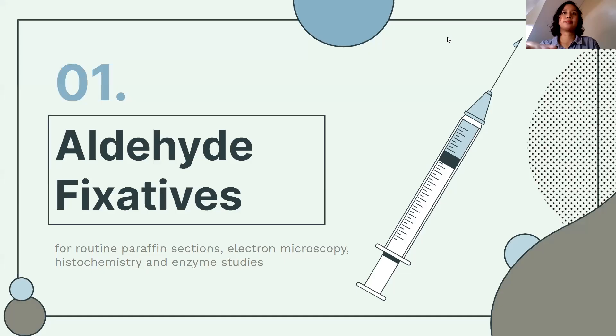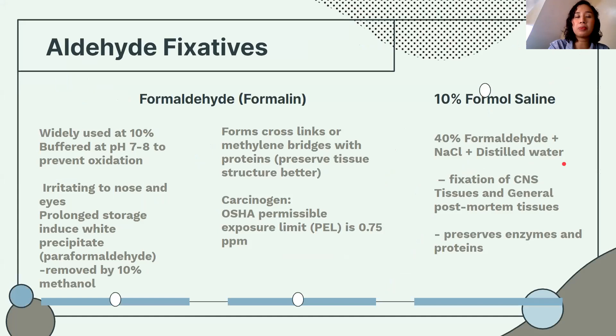Now let's begin with the specific fixatives — aldehyde fixatives. These are used for routine paraffin sections, electron microscopy, histochemistry, and enzyme studies. Starting with formaldehyde or formalin: it's widely used at 10%, buffered at pH 7 to 8 to prevent oxidation. When we use it, it's always at 10%.